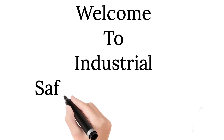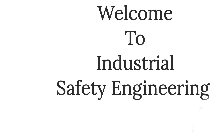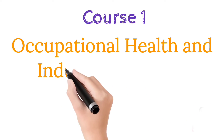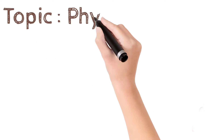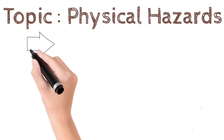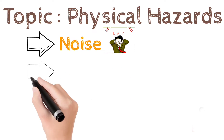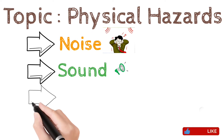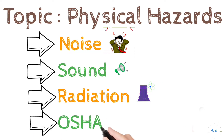Welcome to Industrial Safety Engineering, Course 1: Occupational Health and Industrial Hygiene. Our first topic is Physical Hazards. In this topic we are going to deal with Noise, then Sound, then Radiation, and at the end we are going to deal with OSHA standards.